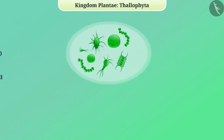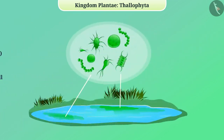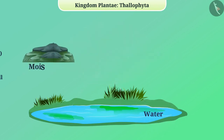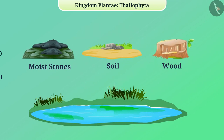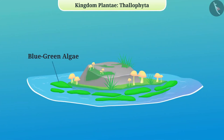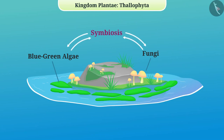Some algae are very small and they form layers on the surface of water; these are called phytoplankton. Apart from water, thallophytes are also found in moist stones, soil and wood. Some of these plants, such as blue-green algae, form permanent interrelationships with certain species of fungi that give various benefits to both. We call this relationship symbiosis.